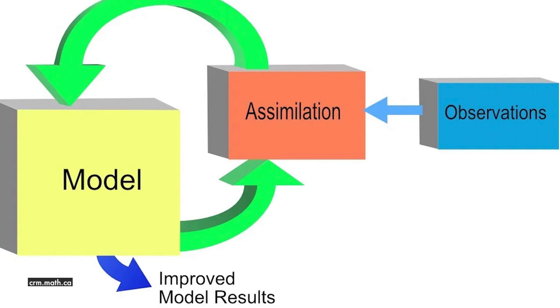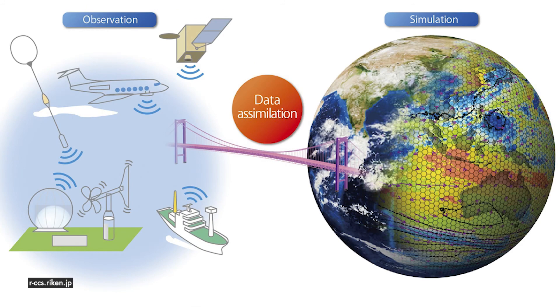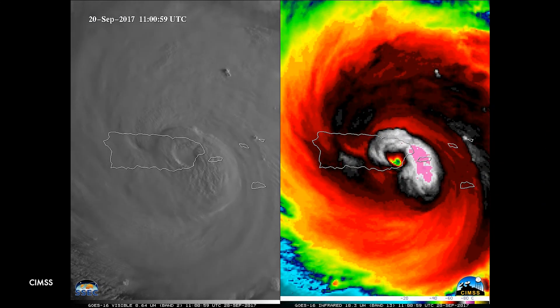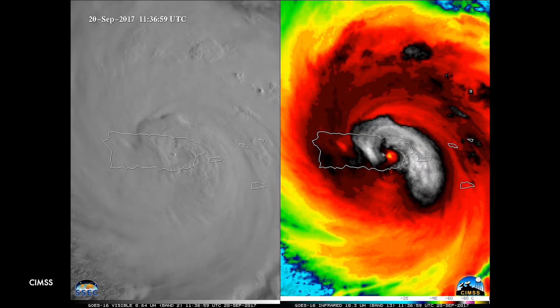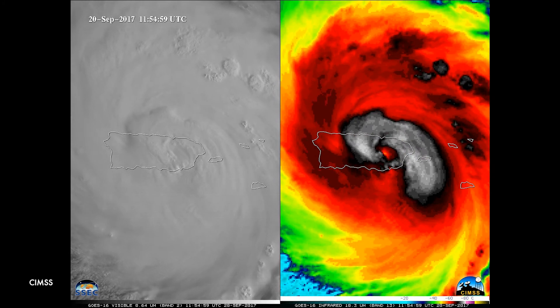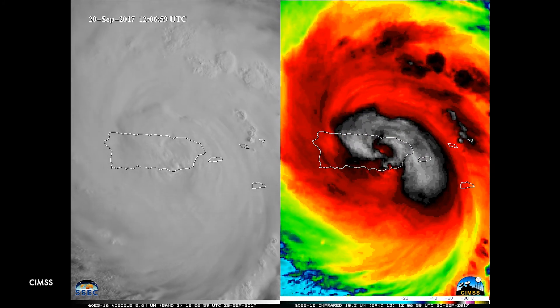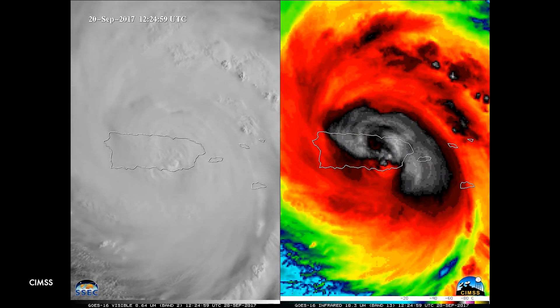We know that neither model forecasts nor observations are perfect. Observations can only observe part or certain aspects of the atmosphere, while forecasts have errors. So data assimilation is a statistical method that tries to combine the information from observations and forecasts in order to produce the best estimate of the atmosphere. My approach is using data assimilation techniques to assimilate remote sensing observations from satellite and radar in order to produce the best estimate of tropical convection and tropical cyclones, and further improve the prediction of tropical weather systems.